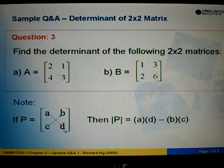We take a times d. The symbol for determinant will be these two lines here. So determinant of P, we take a times d minus b times c. We cross-multiply and subtract.